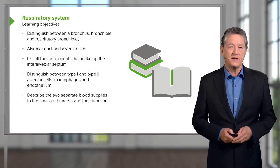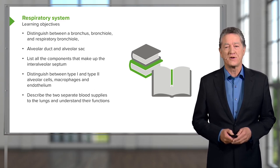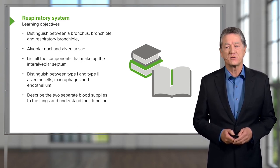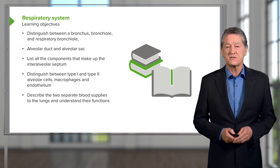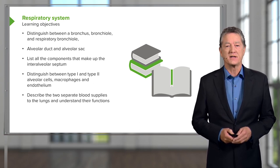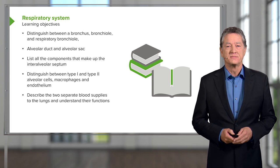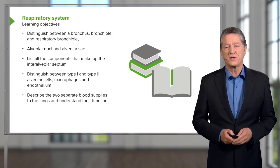It's important that you understand the components of the alveolar wall — the interface where this transfer occurs — and there are a number of cells that make up that interface. Lastly, it's important for you to understand the blood supply to the lung.